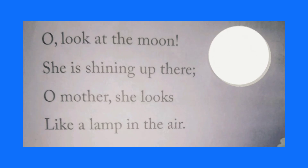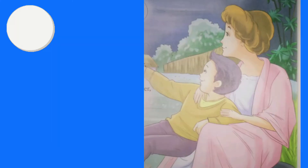Oh look at the moon, she is shining up there. Oh mother, she looks like a lamp in the air. In this first stanza, the little child looks at the moon shining in the sky and tells his mother that it looks like a lamp in the air.